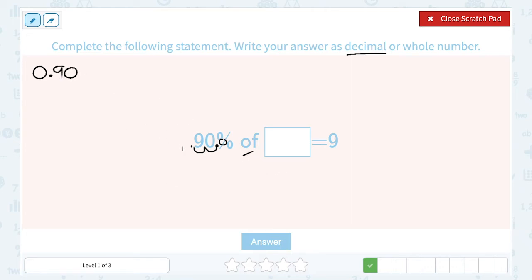Of is a keyword that means to multiply. So I'm going to multiply 0.90 by my missing number. Since I don't know what it is, I'm going to use a variable. You can use x, you can use n to stand for some number. I like x, let's use x here. And that's going to be equal to 9.